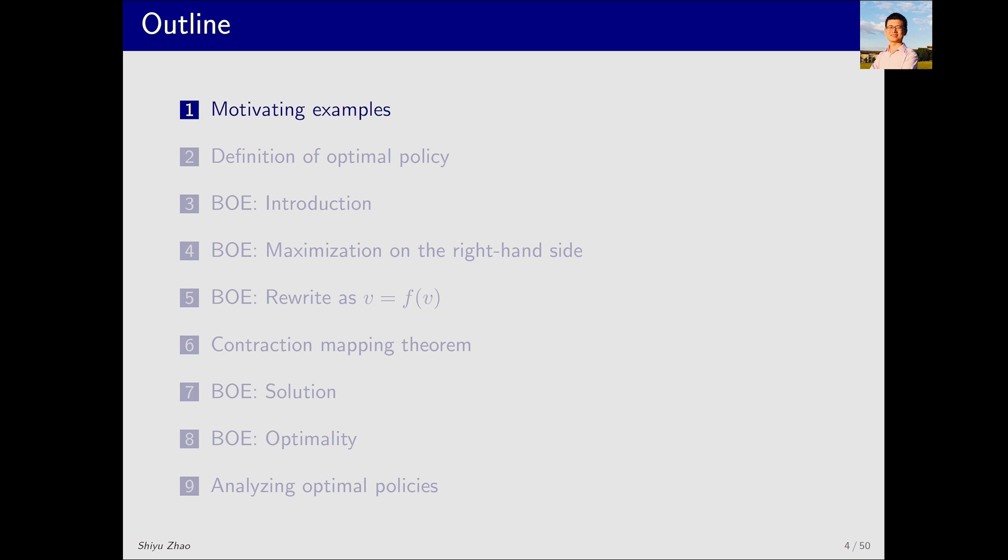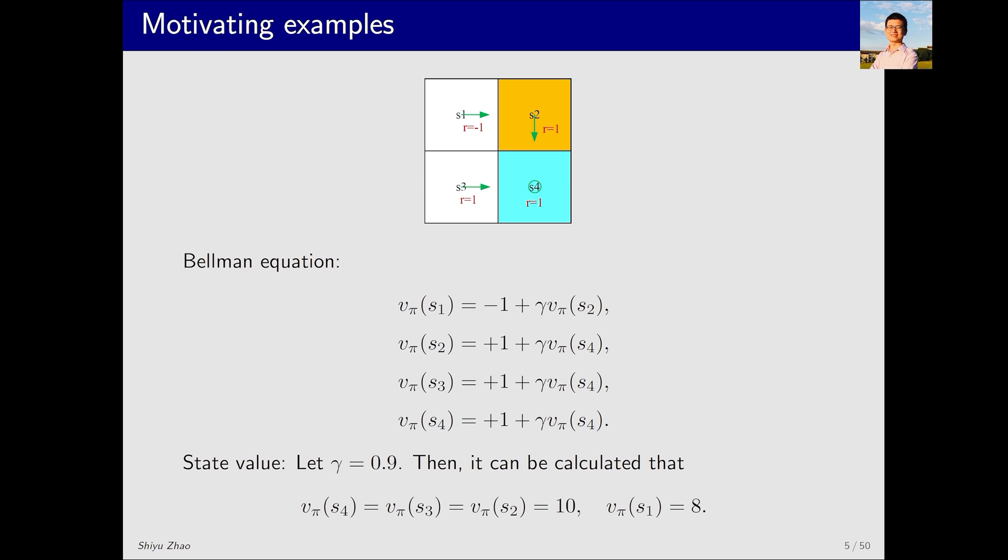Let's begin with an example. We've seen this example several times before, and it is quite straightforward. It involves a policy pi represented by green arrows. Our task essentially involves two steps. First, solving the Bellman equation to determine state values, and second, calculating action values. On this basis, we will introduce an interesting phenomenon.